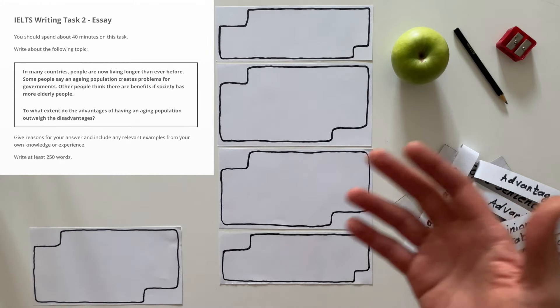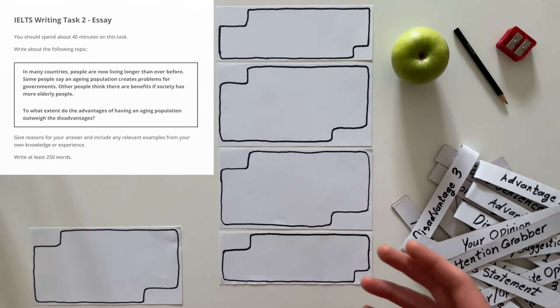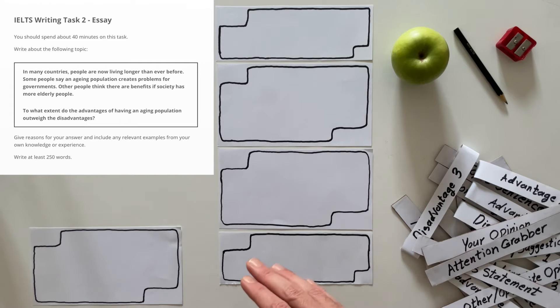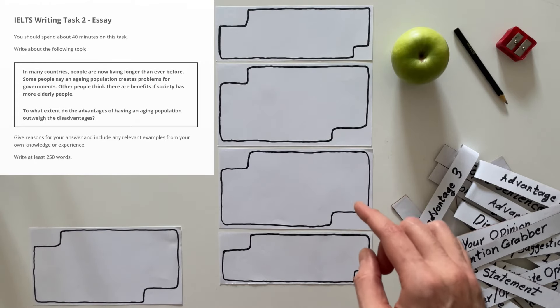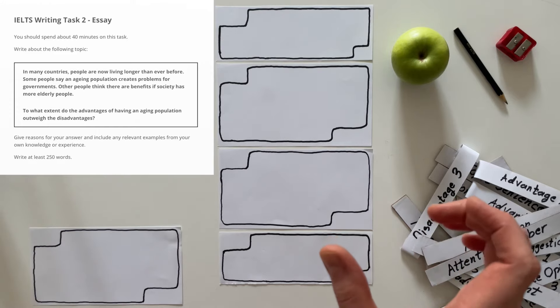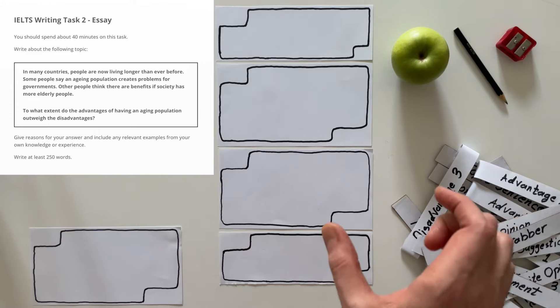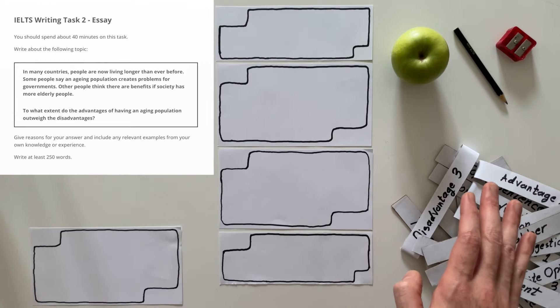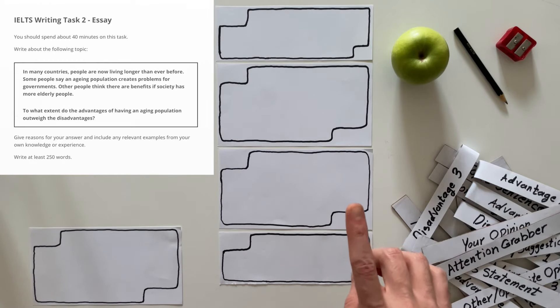It says, in many countries, people are now living longer than ever before. Please pay attention to the grammar. People are now living. This is something that is only related to this time frame, right now. It wasn't like this before. Be careful with the grammar.